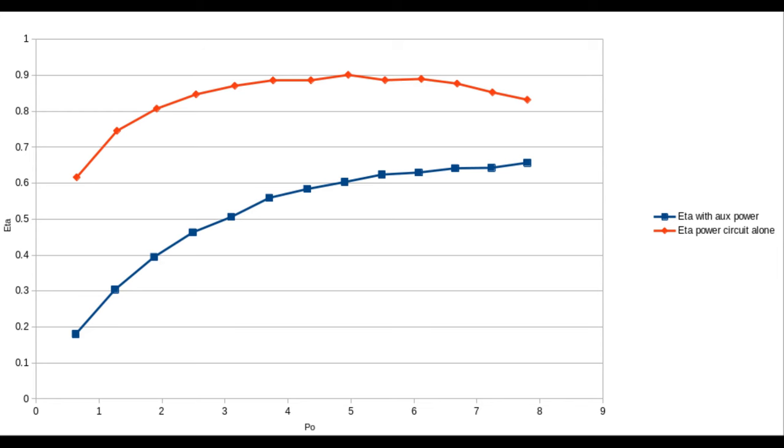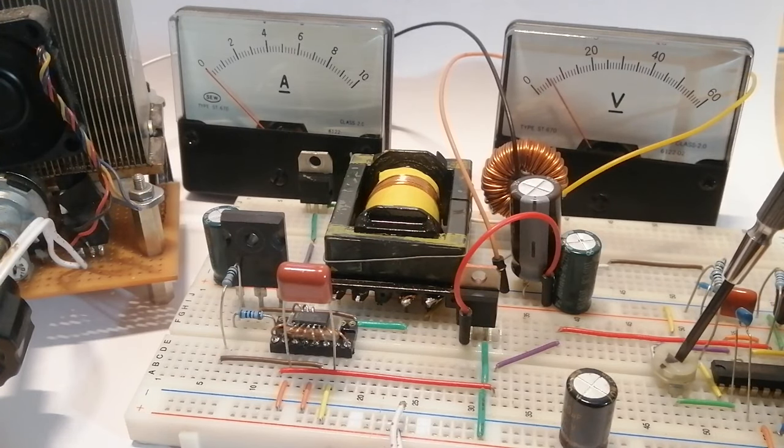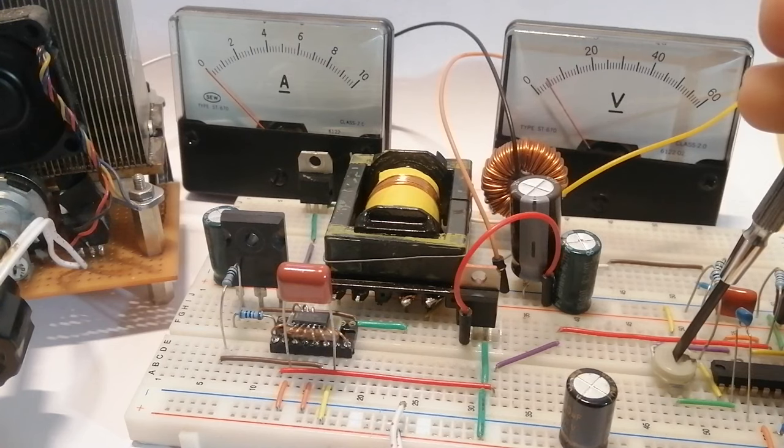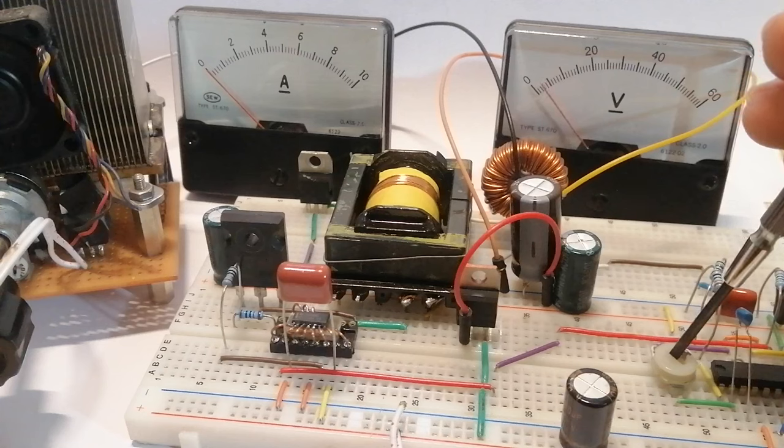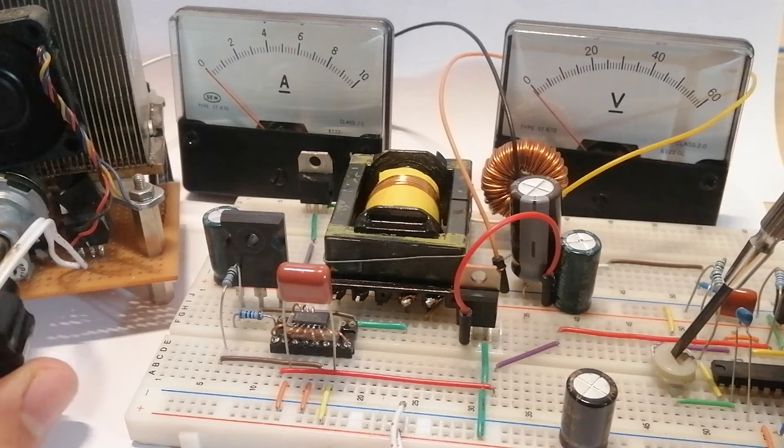Now in all seriousness it's not like I want to try cheating here. The point of this is to show that if we did make a bigger converter and the control circuit shouldn't change, efficiency will definitely improve. Okay so that being said I think it's enough for today. If you enjoyed this video leave it a thumbs up and I hope to see you in the next one. Thanks for watching.